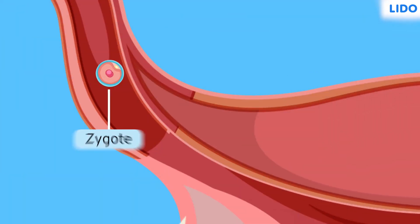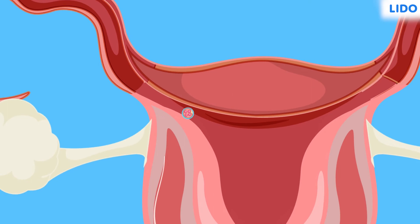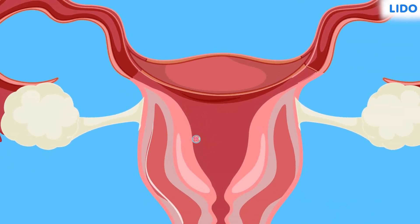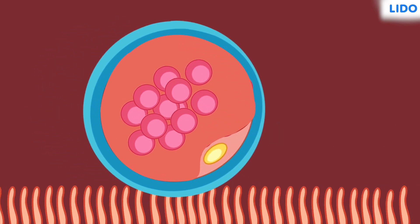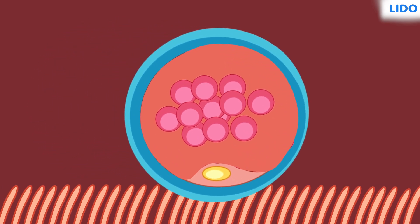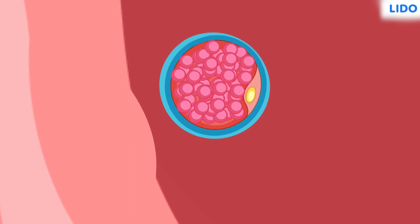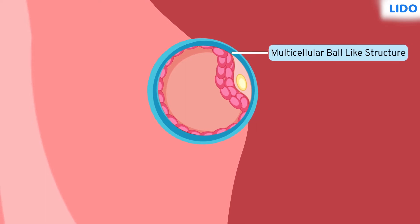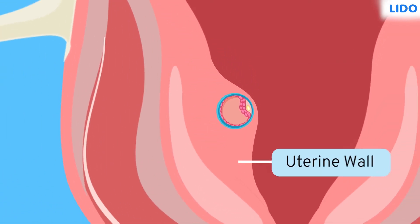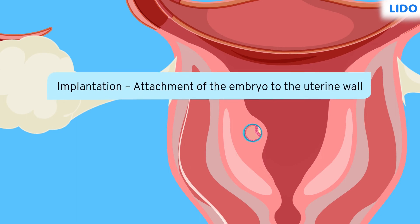Once fertilized, the zygote is formed and gets divided to form a multicellular ball-like structure which travels down the fallopian tube. Then, the hair-like structures of the wall of the oviduct push the multicellular zygote towards the uterus. Cells of the zygote continue to divide, forming a hollow multicellular ball-like structure which attaches itself firmly to the uterine wall and forms the embryo. The fastening of an embryo to the wall of the uterus is called implantation.